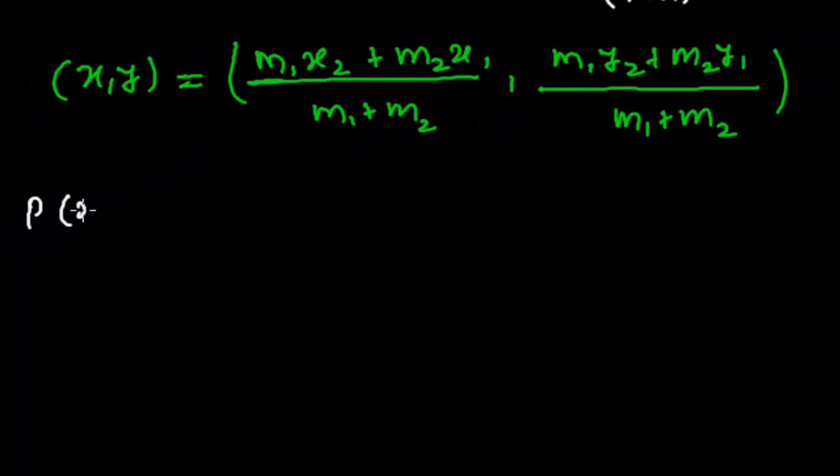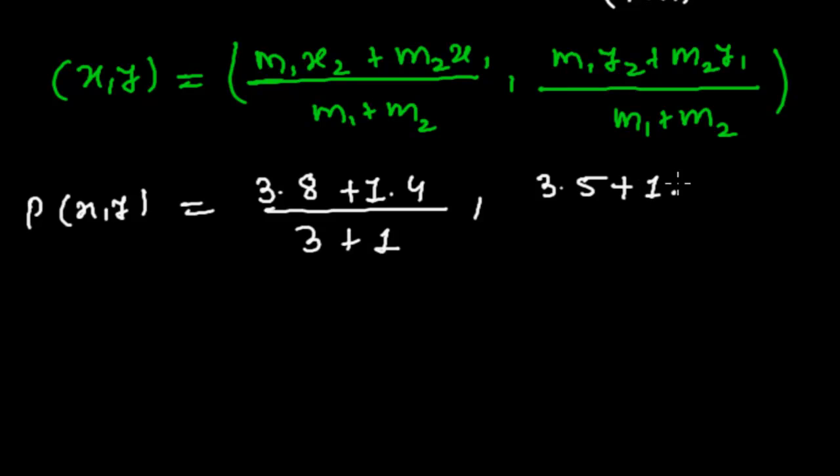P(x, y) equals M1 is 3, so 3 times X2, which is 8, that's 3×8 plus M2 that is 1, multiply X1 that is 4, whole divided by M1 plus M2, that is 3 plus 1. Again, M1·Y2, so 3×5, plus M2·Y1, that is 1 times -3, whole divided by M1 plus M2, that is 3 plus 1.